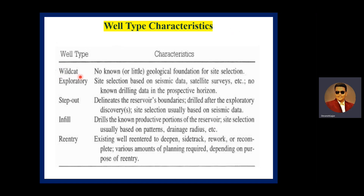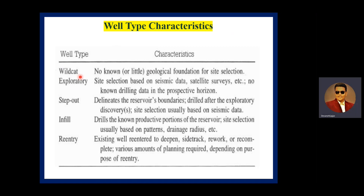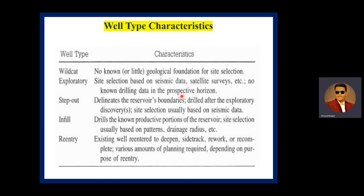A wildcat well is drilled in a geological formation without any prior well located in that prospect — it is the first well drilled in a given area, where we have only geological information collected by geologists. An exploratory well is one where site selection is based on seismic data and satellite surveys; since no well has been drilled before, the exploratory data is very limited and based on seismic data.